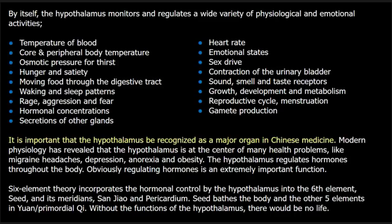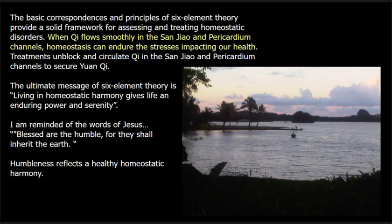Without the functions of the hypothalamus, there would be no life. The basic correspondences and principles of six-element theory provide a solid framework for assessing and treating homeostatic disorders. When qi flows smoothly in the Sanjiao and pericardium channels, homeostasis can endure the stresses impacting our health. Treatments unblock and circulate qi in the Sanjiao and pericardium channels to secure yuan qi. The ultimate message of six-element theory is: living in homeostatic harmony gives life an enduring power and serenity. I am reminded of the words of Jesus — blessed are the humble, for they shall inherit the earth. Humbleness reflects a healthy homeostatic harmony.